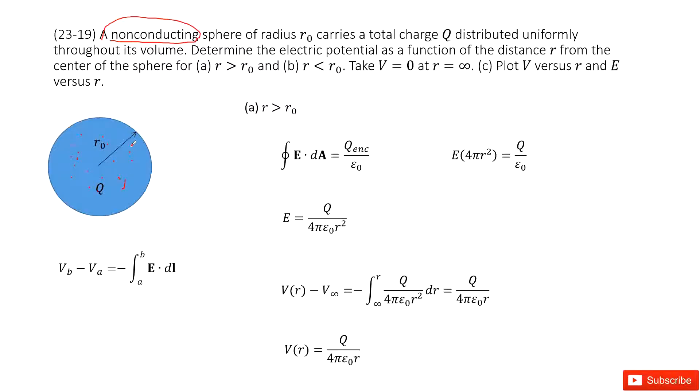And also the radius r0 is given. So we need to find the electric potentials at different locations. And we take V equal to 0 when r equals infinity. So how can we do that?